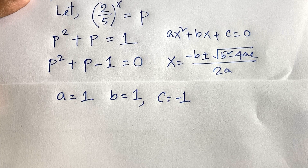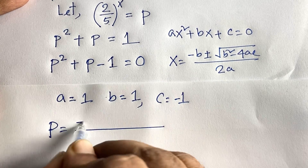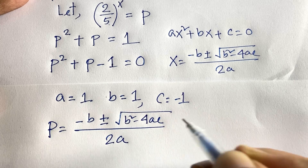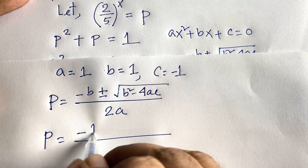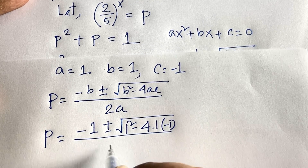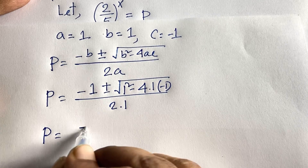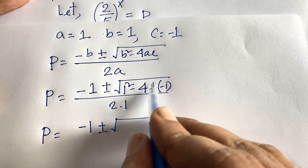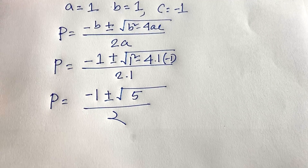Substituting a = 1, b = 1, c = -1 into the quadratic formula: p = (-1 ± √(1² - 4·1·(-1))) / (2·1). The minus times minus gives plus, so we get √(4 + 1) = √5, over 2·1 = 2.